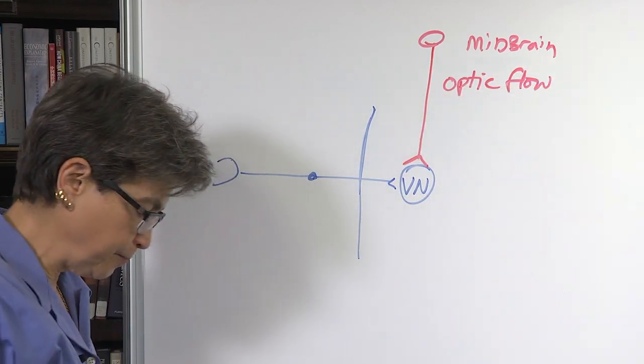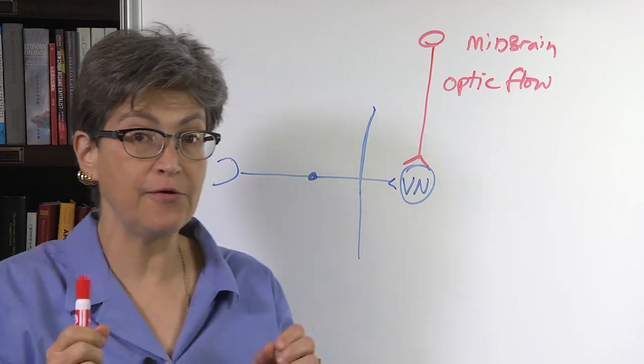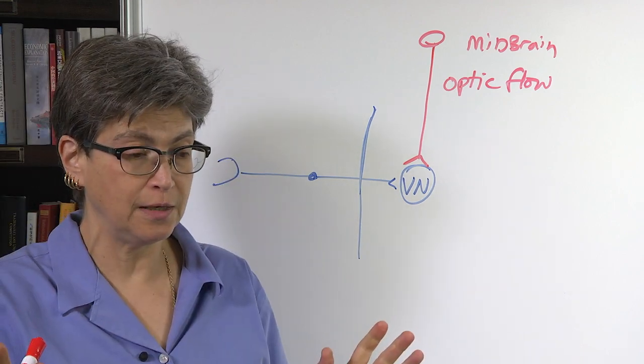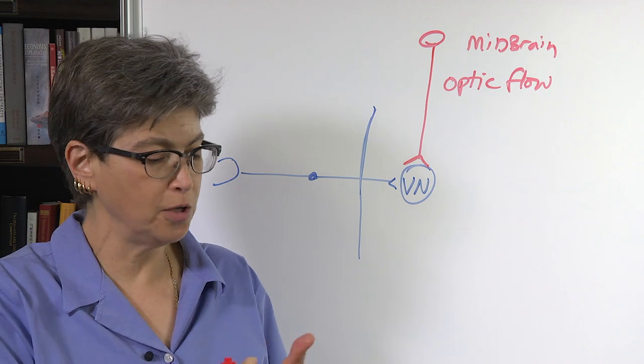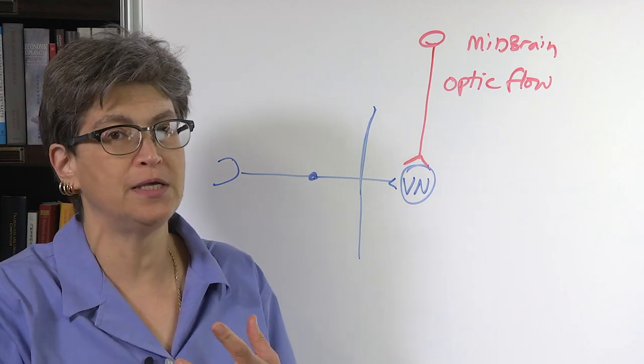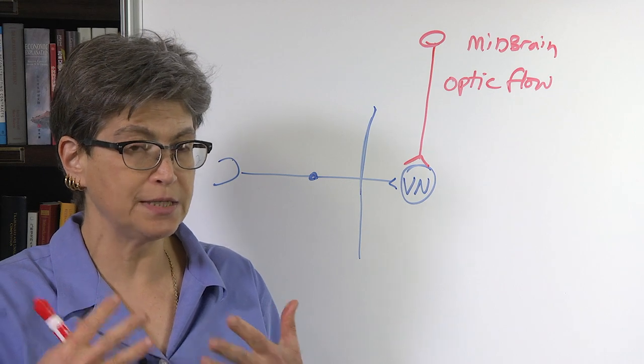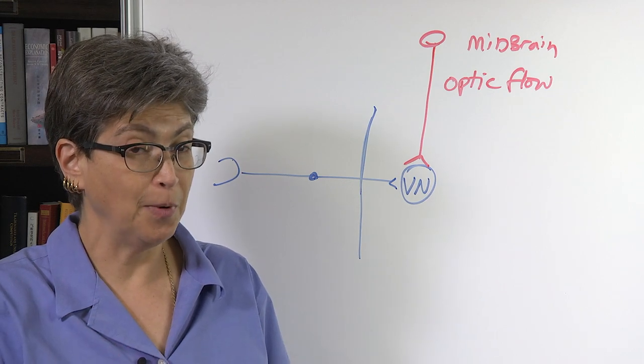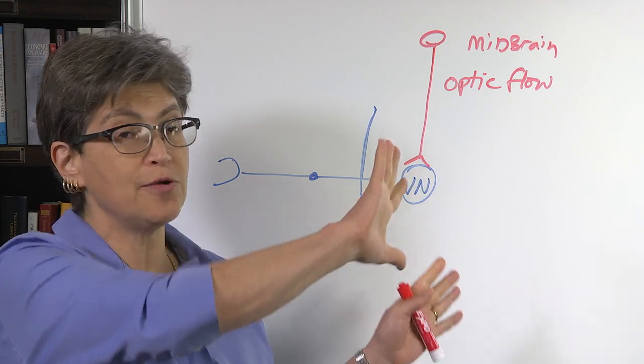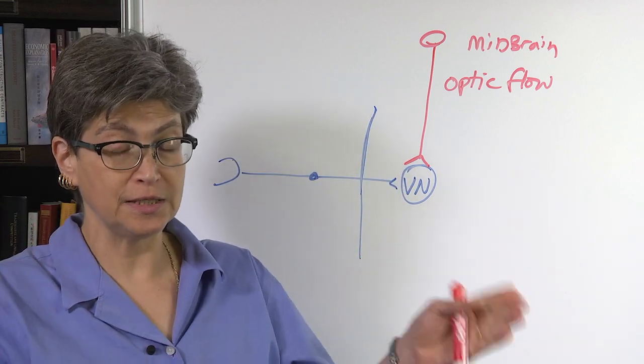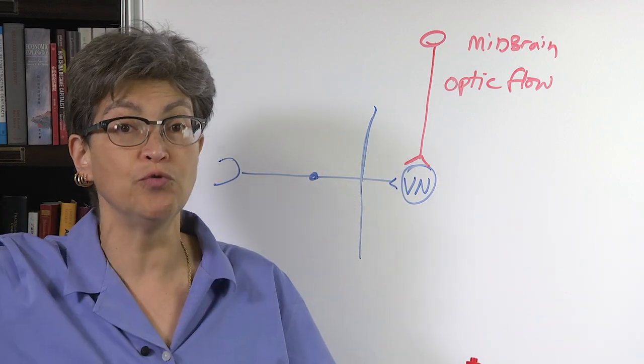Now optic flow is information about the visual scene, but it is not what color it is. It's not what form it is. You can't tell very much about it, but what you can tell is where the entire visual field, is it staying the same or is it moving?